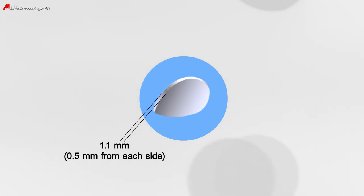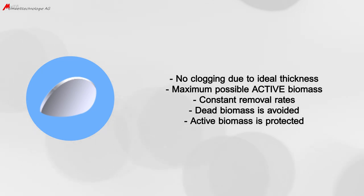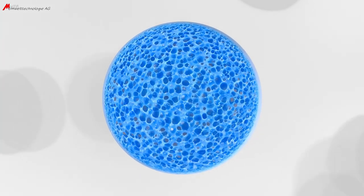Consequently, the biofilms are permanently capped at a thickness of 0.5 mm from both sides, whereby an optimal biofilm layer thickness and optimal diffusion is attained. There is no need to worry about a potential loss of active biomass on the Mutag Biochip. The biofilm establishes inside the pores, where it is protected against being flushed or sloughed off. The geometry of the Mutag Biochip ensures that the maximum possible amount of active biomass can be permanently kept on the carrier. Dead biomass in the pores will be metabolized and displaced by active microorganisms, keeping the pores permanently filled with active biomass.